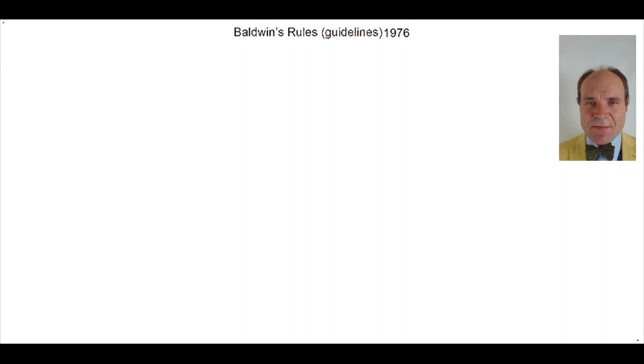Jack Baldwin was sat in MIT during 1976. He'd been reading the chemical literature and started to see patterns regarding some of the reactions he was reading about. He decided to set these ideas down in a paper and they later became known as Baldwin's Rules.